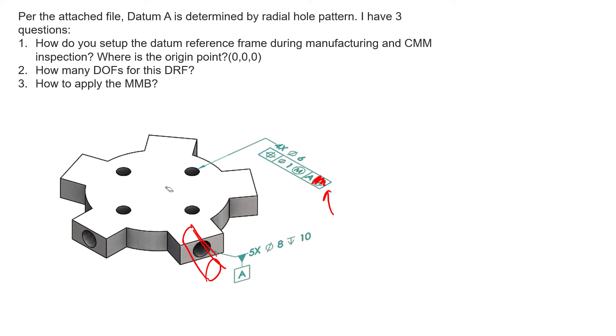That's because our datum feature is a pattern of features of size, and it's going to be interpreted that we get datum shift when the feature exists beyond the MMC of our feature of size. Our MMC of our feature is eight plus or minus 0.1, like we're assuming, which gives us an MMB boundary of 7.9 or the smallest diameter.